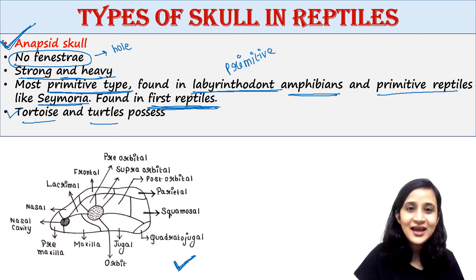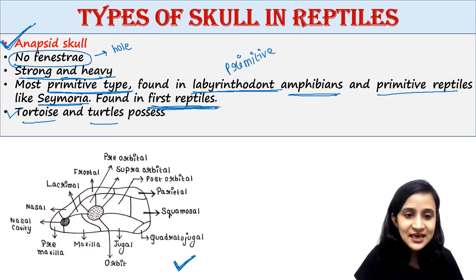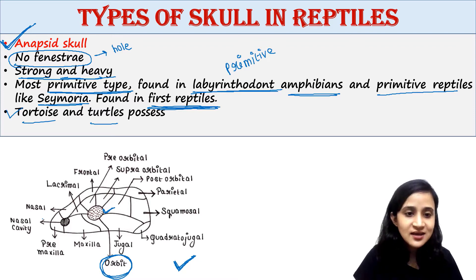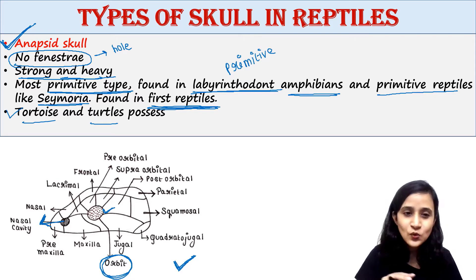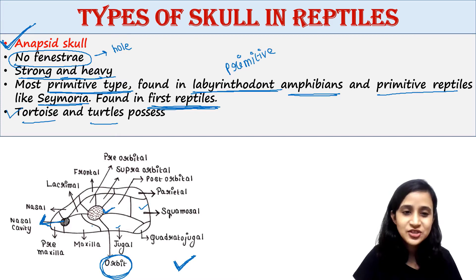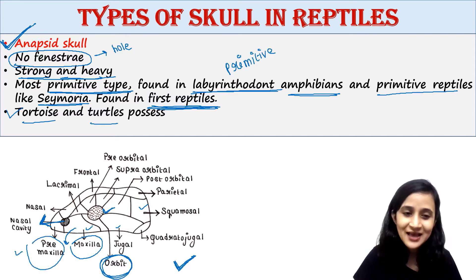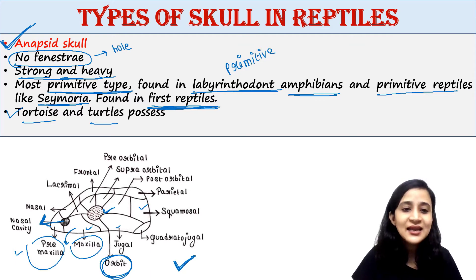Let's see the anatomy of the skull quickly. The orbit is a hole where the eyes of the reptiles are placed. The nasal cavity is another hole or cavity where the nose is present. The bones present in the skull of reptiles include maxilla and, before maxilla, pre-maxilla.